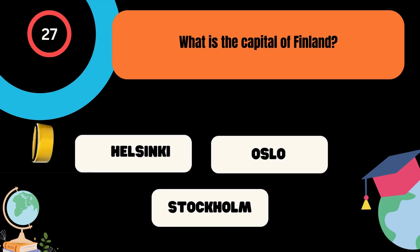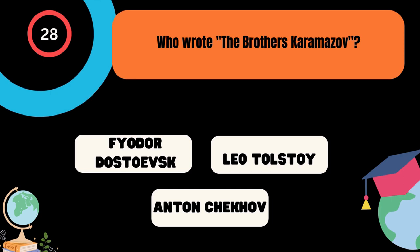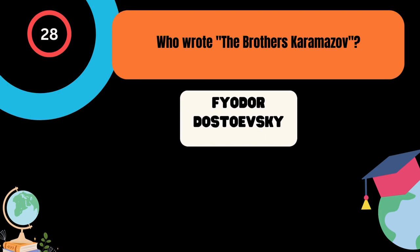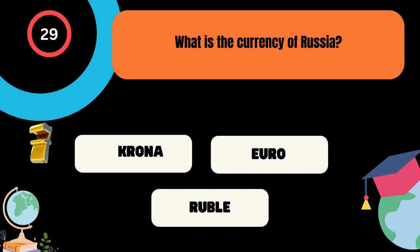Who wrote The Brothers Karamazov? A. Fyodor Dostoyevsky, B. Leo Tolstoy, C. Anton Chekhov. And the correct answer is Fyodor Dostoyevsky. What is the currency of Russia? A. Krona, B. Euro, C. Ruble. And the correct answer is Ruble.